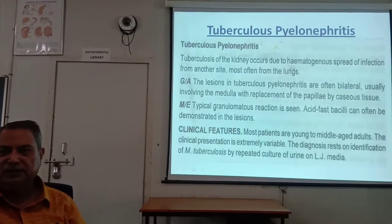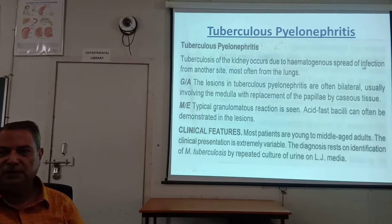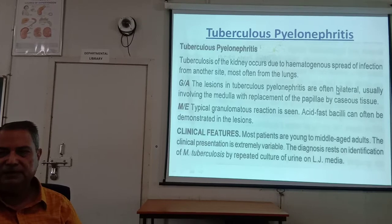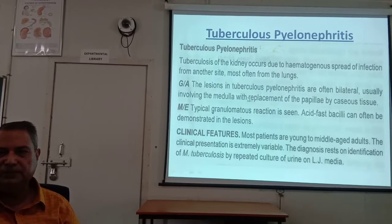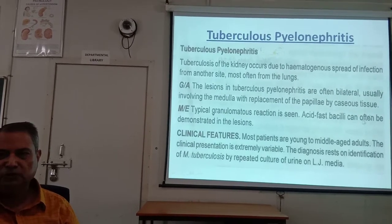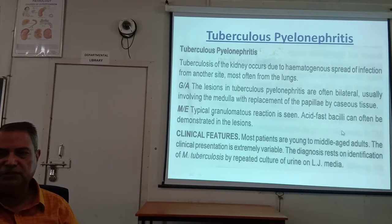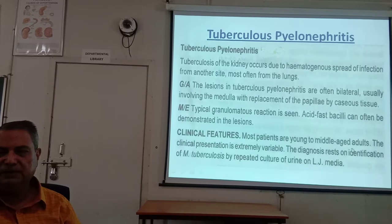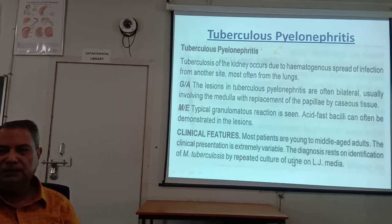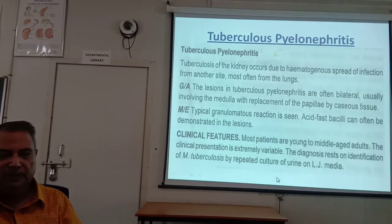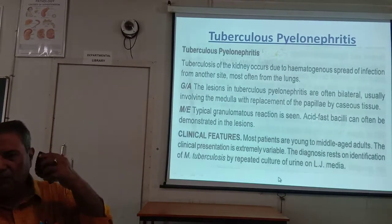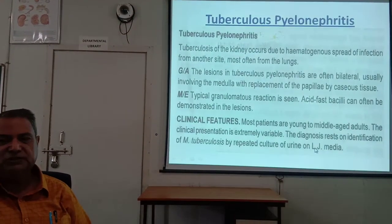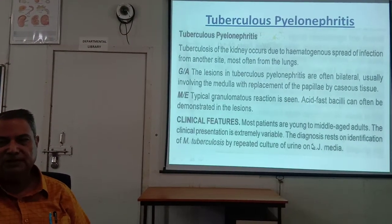Renal tuberculosis is due to hematogenous spread from another site, mostly from the lungs. The lesion is usually bilateral, involving the medulla, with replacement of the papillae by caseous tissue. Microscopically, typical granulomas are seen and acid-fast bacilli can be demonstrated. Most patients are middle-aged. Diagnosis rests on identification of Mycobacterium tuberculosis on acid-fast stain and repeated culture of urine on Lowenstein-Jensen or Dorset-Egg media.